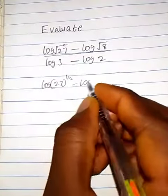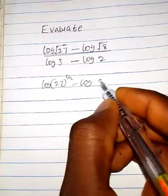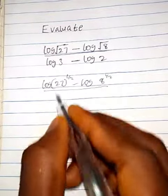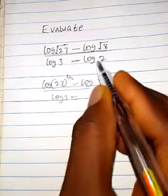Minus natural log of root 8 can also be written as 8 raised to the power half, everything over log 3 minus log 2.